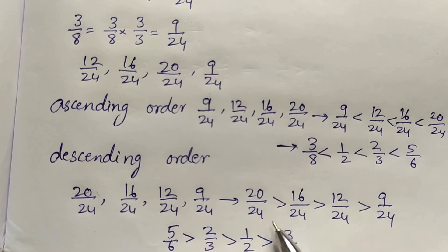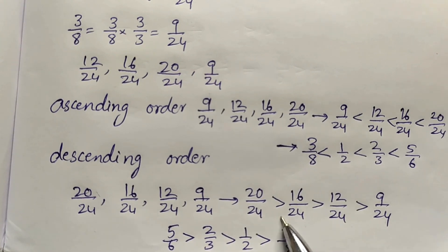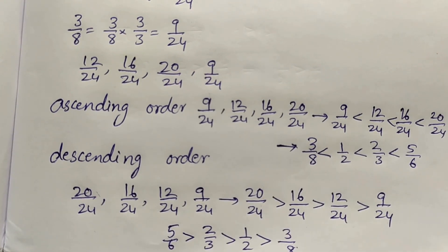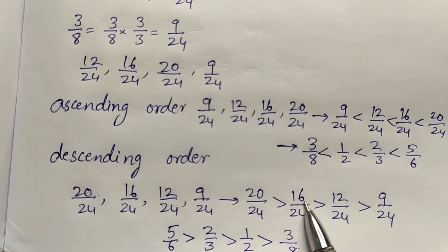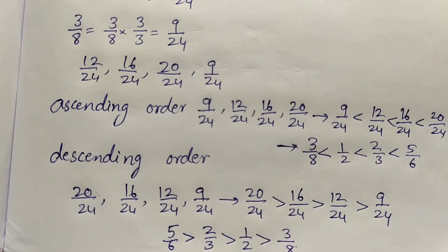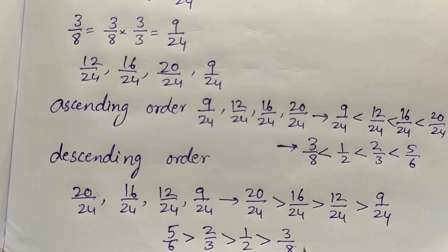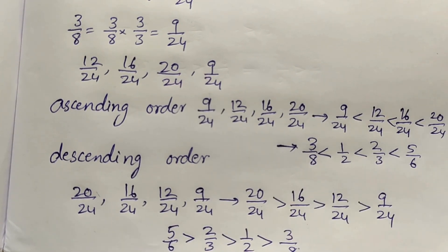The equivalent fractions correspond back: 20 by 24 means 5 by 6, 16 by 24 means 2 by 3, 12 by 24 means 1 by 2, and 9 by 24 means 3 by 8. So in this way we compare the fractions.